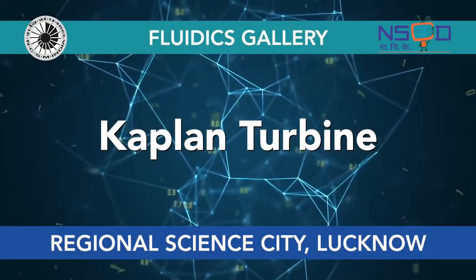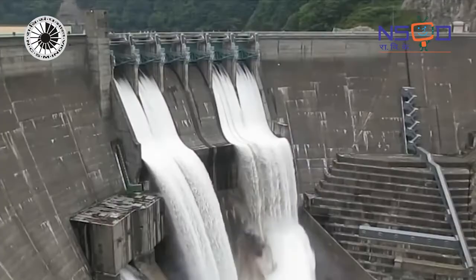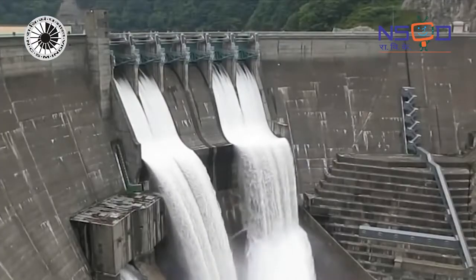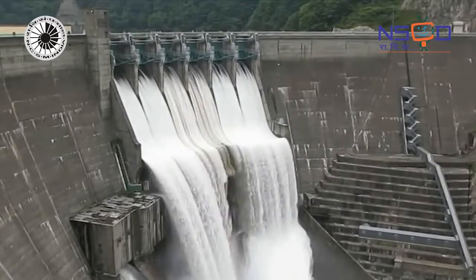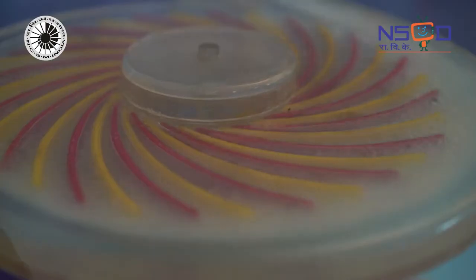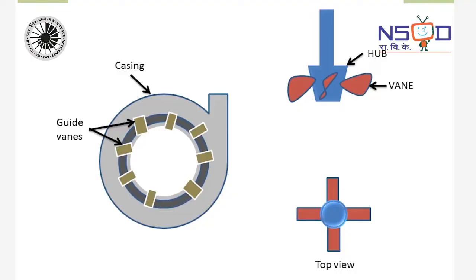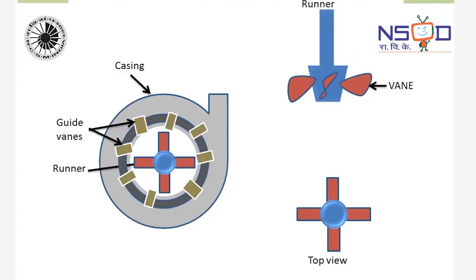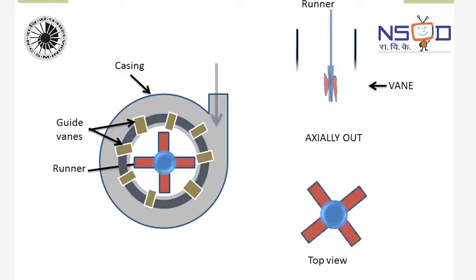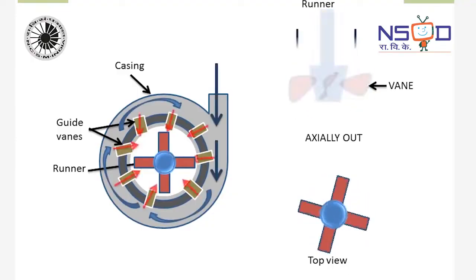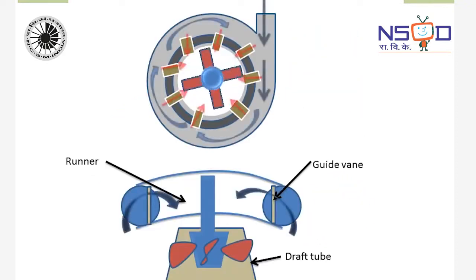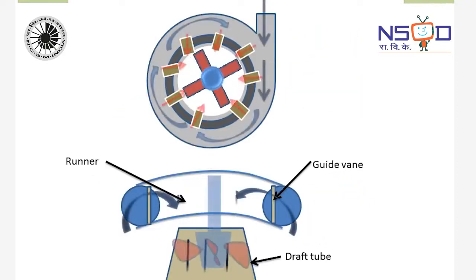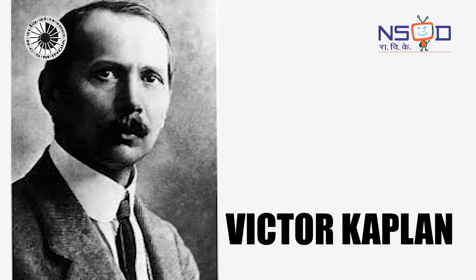Kaplan turbine. We all know that water gushing down from a great height can generate electricity with the help of turbines. A turbine is a mechanical device that extracts energy from fluid flow. One such turbine was developed by an Austrian professor, Victor Kaplan, in the early 20th century.